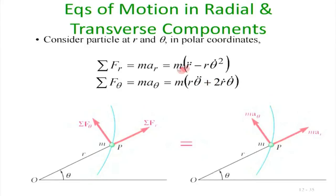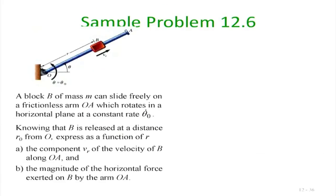A simple problem: block B of mass m can slide freely on a frictionless arm OA, which rotates in the horizontal plane (so gravity acts in the z-direction and can be neglected). We have r as the radial position and θ as the angle. B is released from rest at distance r₀ from O. Find vᵣ (the radial velocity component) and the horizontal force the sleeve exerts on arm OA.